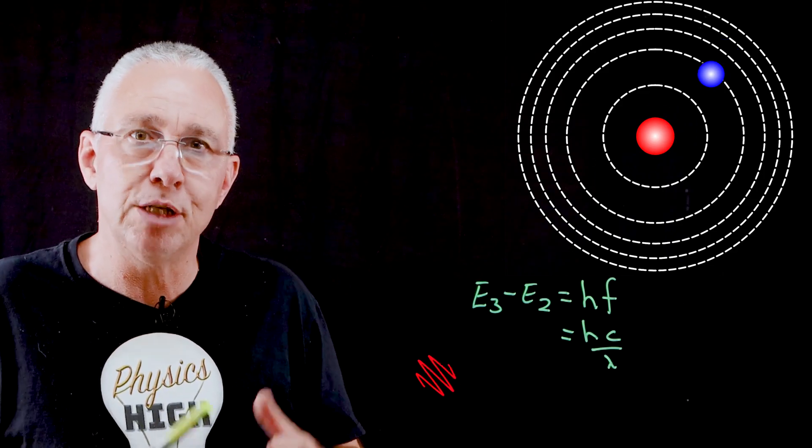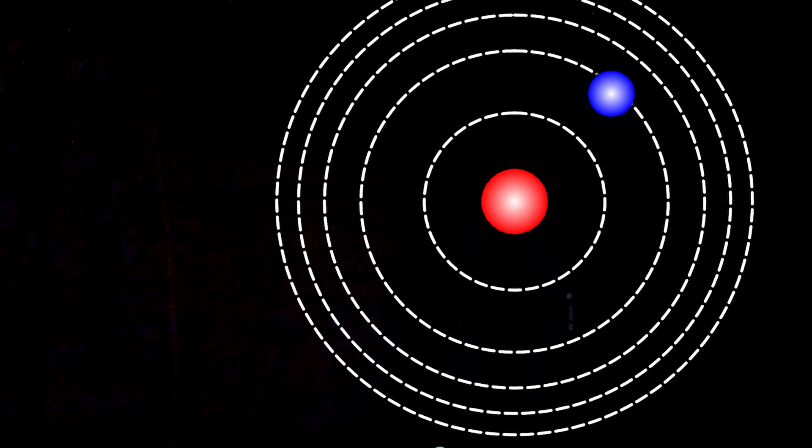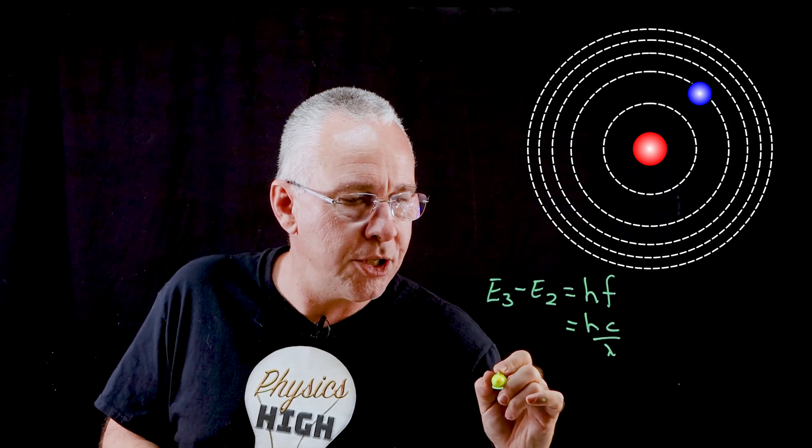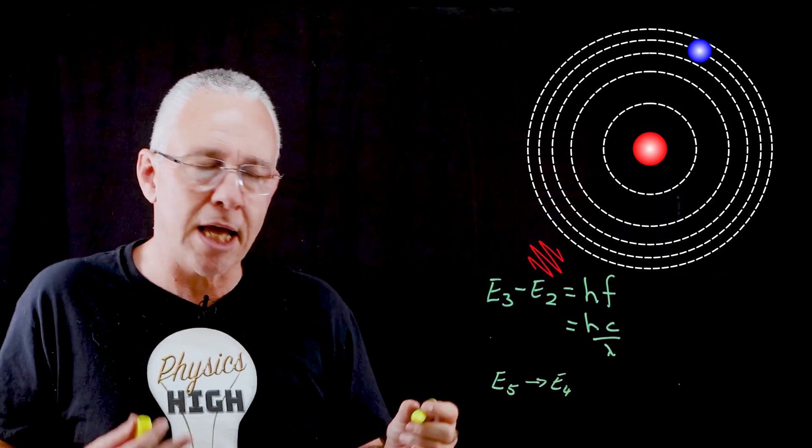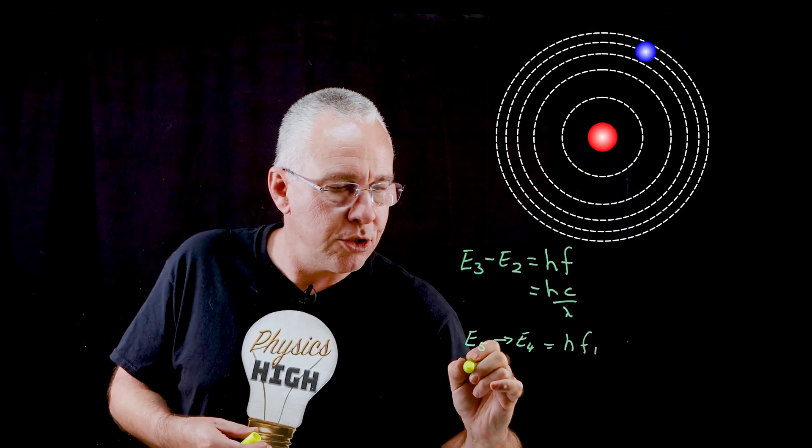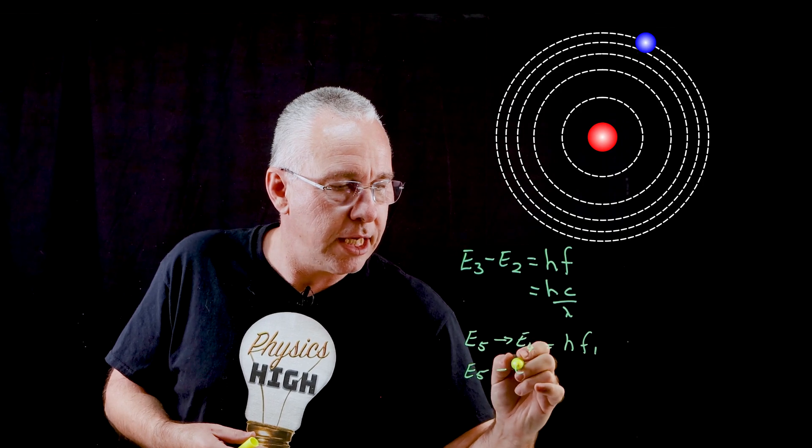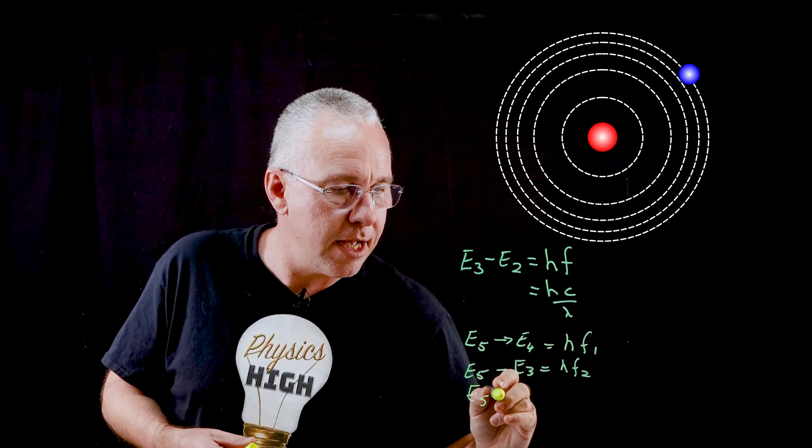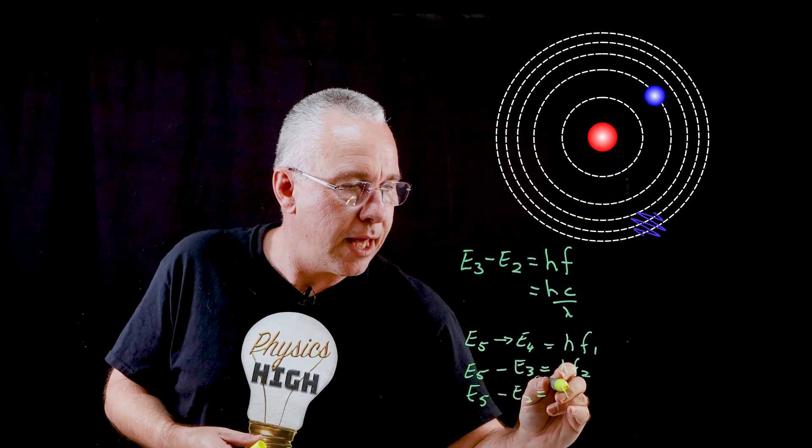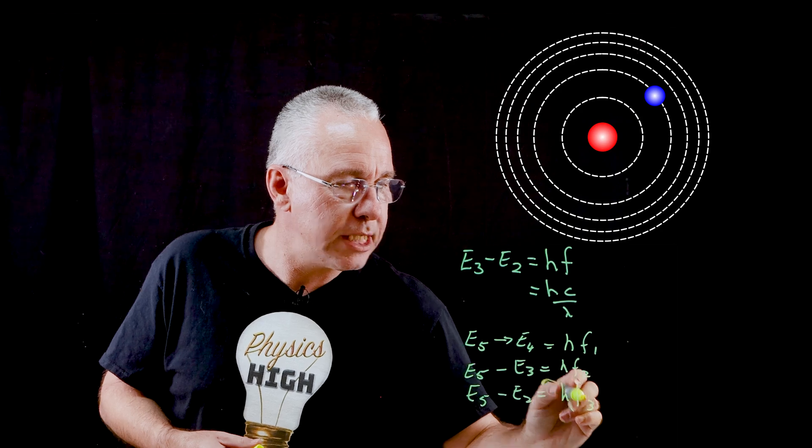In this case, that photon's energy must be equal to the difference. For example, it might jump from e5 down to e4, which gives us a very specific energy. Of course, it could jump from e5 down to e3. That will give us a different energy loss. e5 jumping down to e2, that will be a different frequency again.